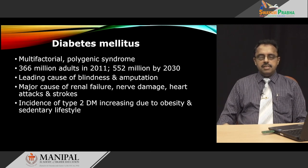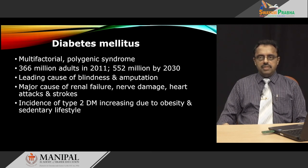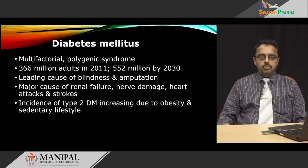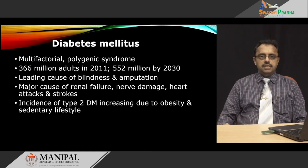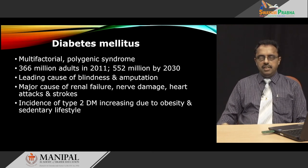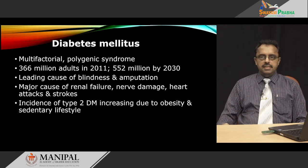Diabetes Mellitus places an immense burden on the health economy of the world, and India is now said to be the diabetes capital of the world. Diabetes Mellitus is a multifactorial polygenic syndrome involving several different genes and it affects millions of people worldwide. It is projected that by the year 2030, almost 552 million people would be diagnosed with this condition. It is the leading cause of blindness and amputation in the world and a major cause of renal failure, neuropathy, heart attacks and strokes. The incidence of type 2 diabetes mellitus is increasing today due to changes in lifestyle which have caused a sedentary lifestyle and increase in the incidence of obesity.